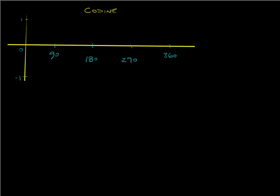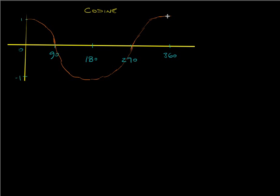So let's draw this out. It starts at 1 at 0 degrees, then it drops down to 0 at 90. At 180 it's negative 1. At 270 it's 0 again, and then at 360 it goes back up to 1.